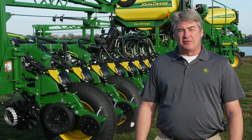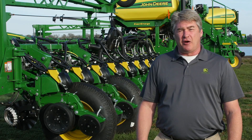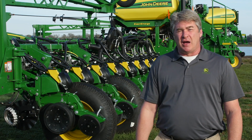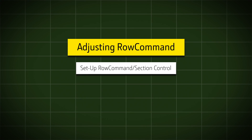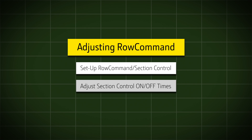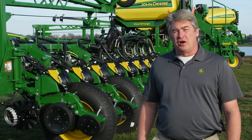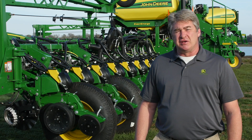With a little effort in regards to proper setup of Section Control, Row Command can minimize gaps and overlap, allowing you to add to your bottom line. After watching this video, you now know the proper setup of Row Command and Section Control, and how to adjust Section Control on-off times to minimize gaps and overlap.